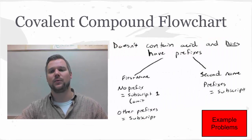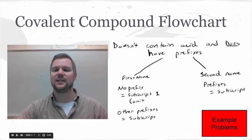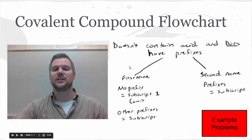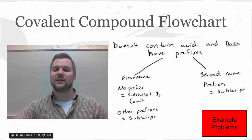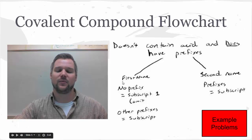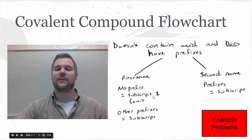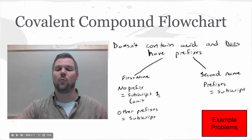Here's a flowchart of how that would look graphically. We know we're using the covalent naming system because we don't see the word acid and we do see a prefix. The first name might have a subscript attached to it if there happens to be a prefix. Sometimes we don't have a prefix on the first name. Even if we don't have a prefix, the subscript, which would be one, you're going to omit that inside your actual formula.